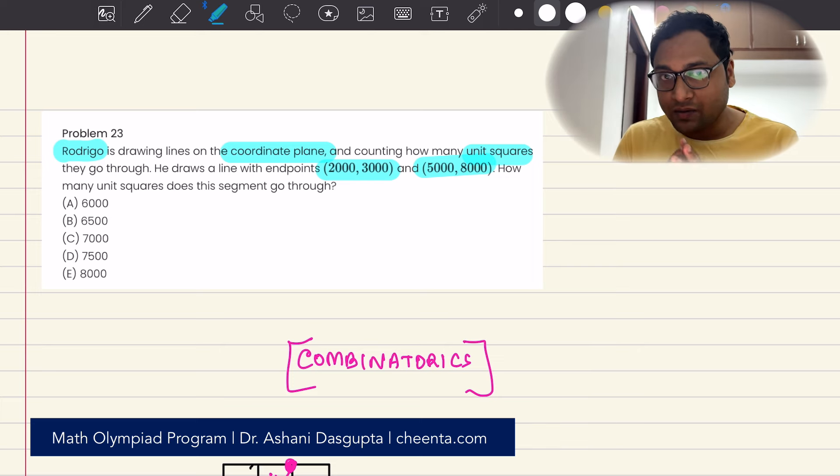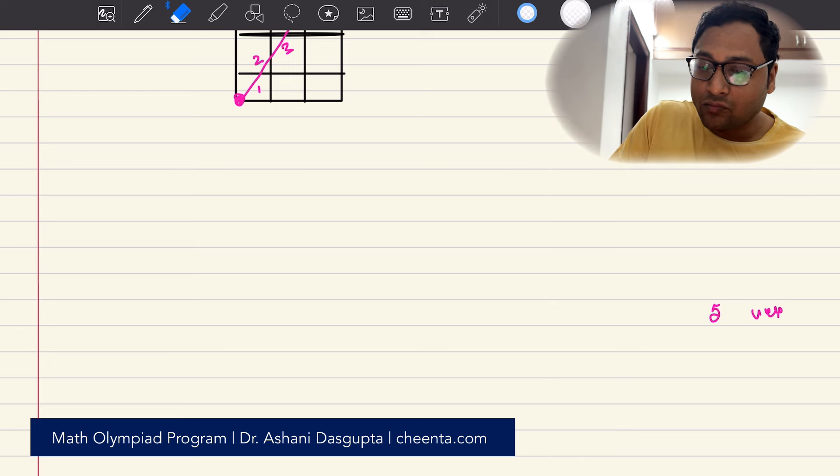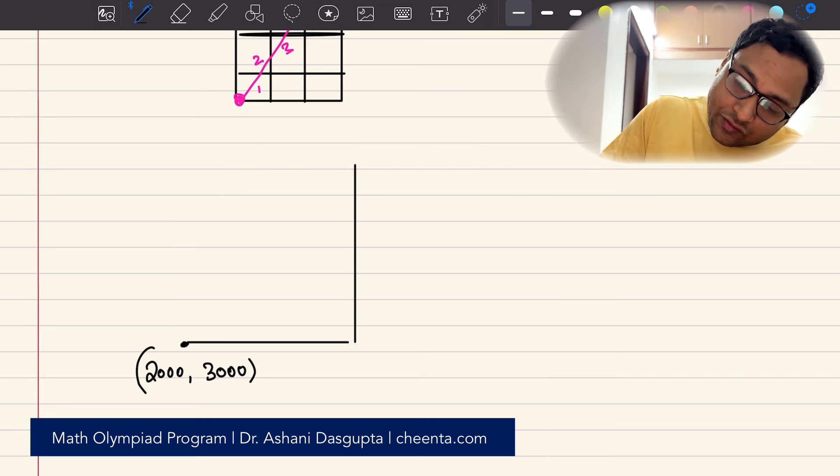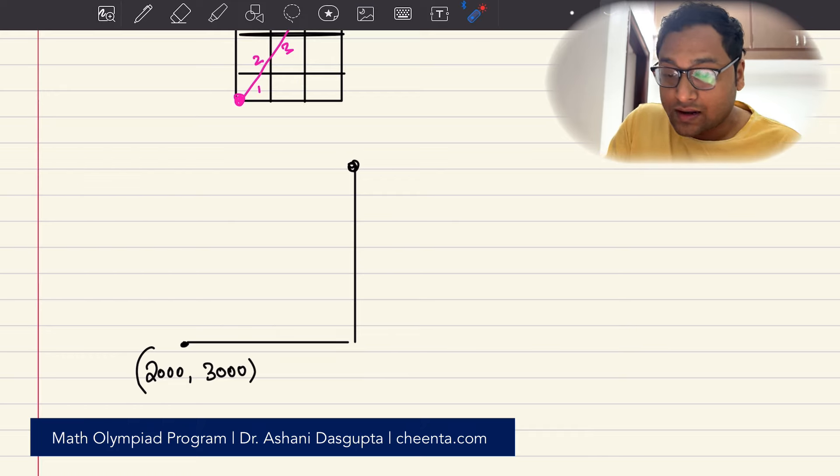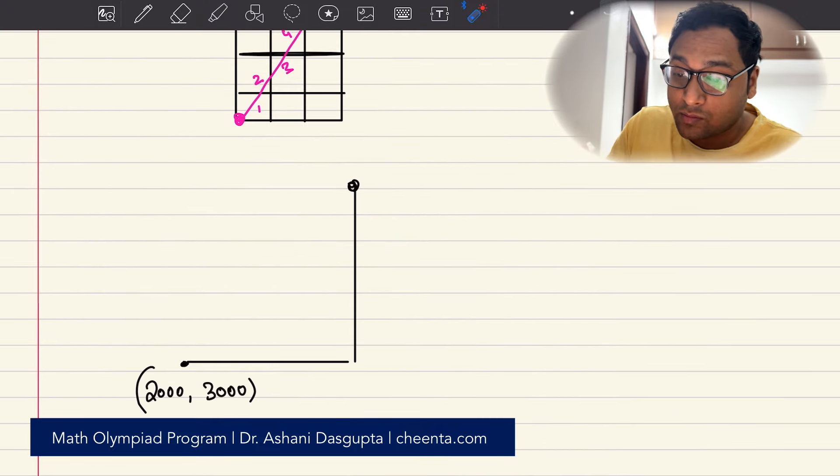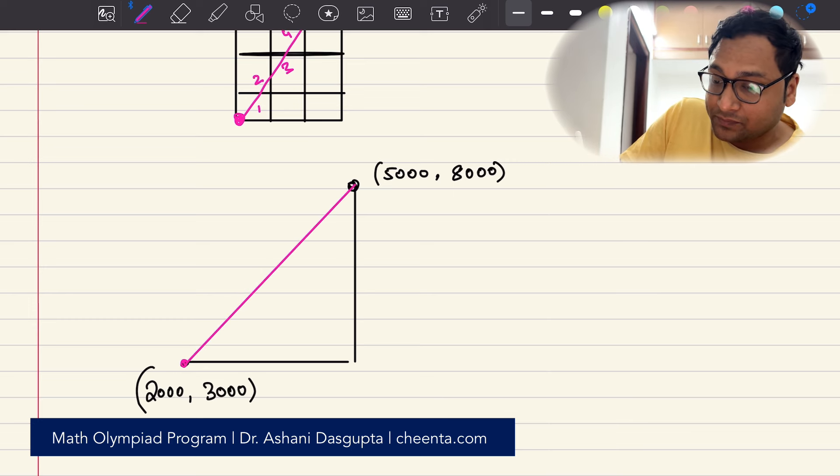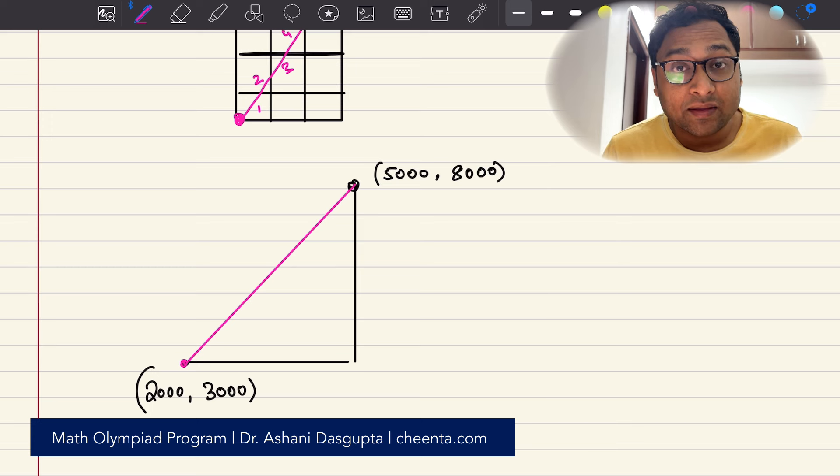So let's see how we can solve this problem. Let's draw a little model of what's happening. We have 2000, 3000 and the other point is 5000, 8000. So this is 5000, 8000 and he has drawn a line connecting these two points. Of course, I'm not drawing the entire coordinate plane. It can be very hard to actually draw all the squares from 2000, 3000 to 5000, 8000.